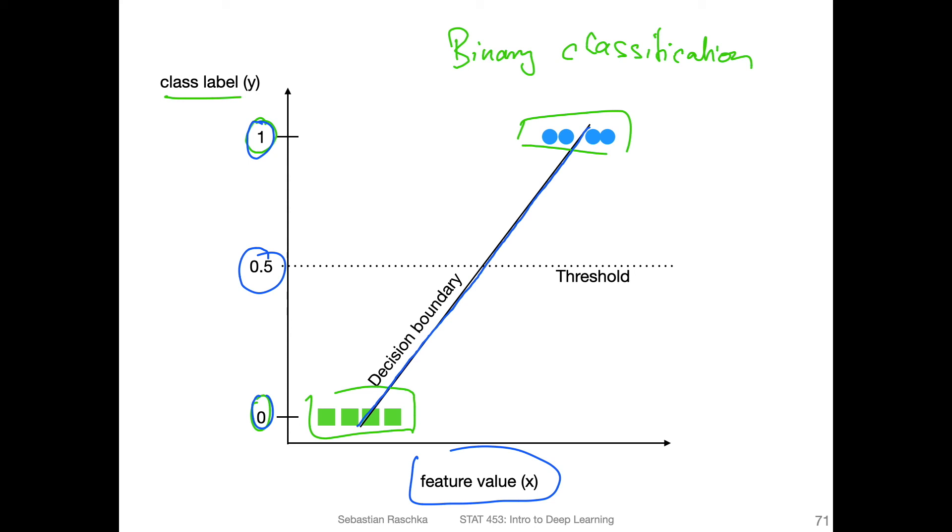We say then, if something is bigger than a certain value, if the prediction is greater than point five, produce class label one.